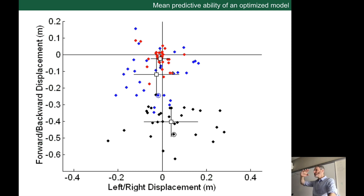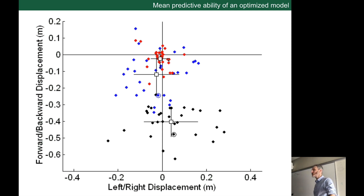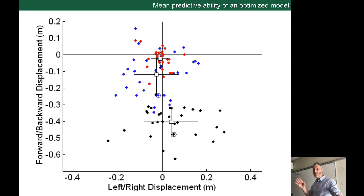We could have cheated by tilting the table downward, in which case any controller would have caused the robot to move in the right direction. So the red dots are a control experiment — a way to prove to our colleagues we're not cheating. We took 30 random controllers, dropped them into the physical robot, drew red dots wherever it ended up, and it stays more or less near the origin. Maybe there's a little bias in the mass distribution or the tilt of the table, but not enough to account for the blue dots.